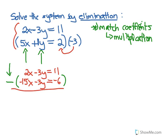So: 2x minus negative 15x — minus a negative becomes positive — gives 17x. Negative 3y minus negative 3y is 0, so we skip that. Then 11 minus negative 6 — minus a negative is positive — gives 11 plus 6, which is 17. Now it's a simple one-variable equation. Divide both sides by 17 and we get x equals 1.